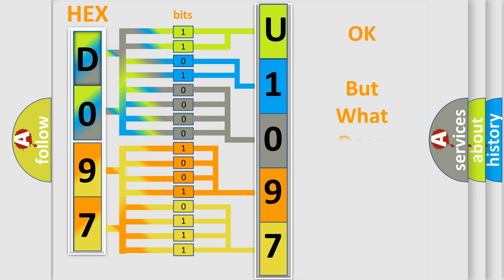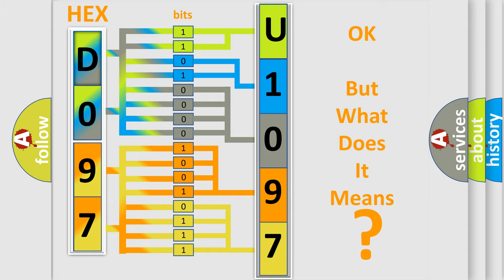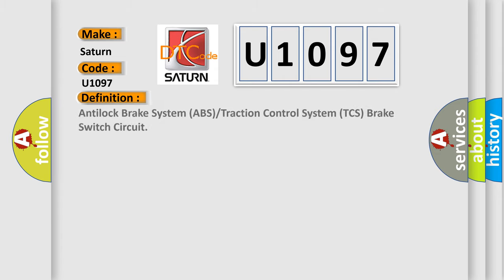The number itself does not make sense to us if we cannot assign information about what it actually expresses. So, what does the Diagnostic Trouble Code U1097 interpret specifically for Saturn car manufacturers? The basic definition is: Anti-lock Brake System (ABS) or Traction Control System (TCS) Brake Switch Circuit.